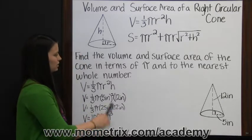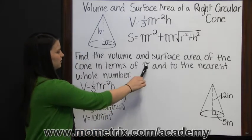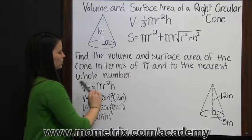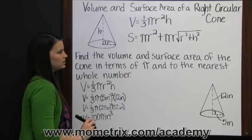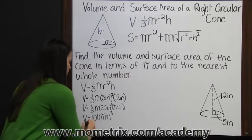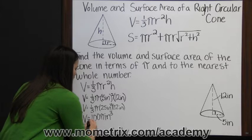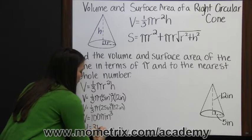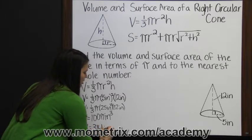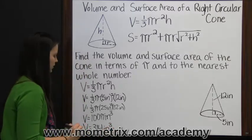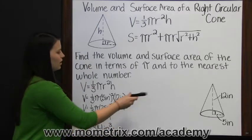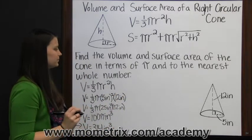So there's our answer in terms of pi. Now for the nearest whole number, we multiply one hundred times pi. We get that our volume is three hundred fourteen inches cubed. So there are two answers for the volume of that cone.